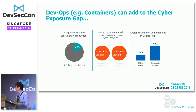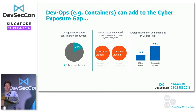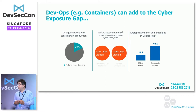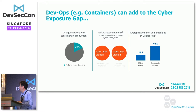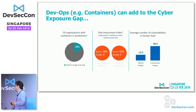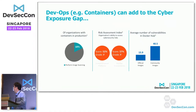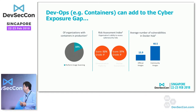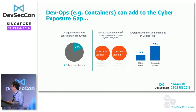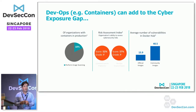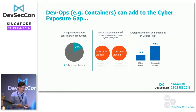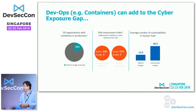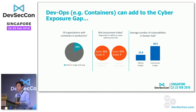These are very recent numbers: of organizations leveraging containers, only about 18% actually do any kind of container scanning — whether pre-deployment or post-deployment. Organizations' ability to assess cybersecurity risk is fairly low. The most interesting statistic is that the average number of vulnerabilities in an official Docker Hub image is about 15 to 16, while community images are much worse at around 40 vulnerabilities per image. Developers will grab whatever they can to make their jobs easy.